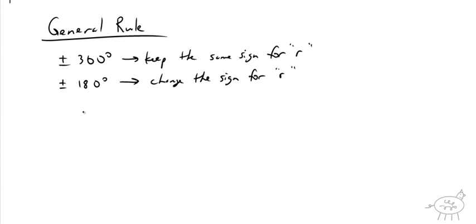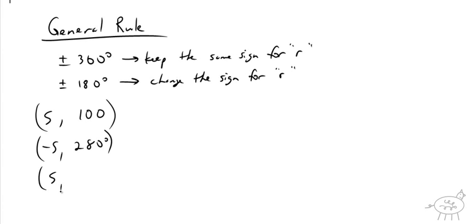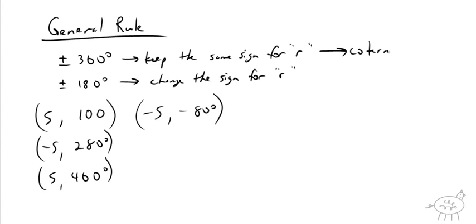Let's try another one: 5 comma 100 degrees. It's the same thing as negative 5 comma 280 degrees — when I add 180, I get 280. Add another 180 and I get 5 comma 460 degrees. I can also say negative 5 comma, and if I subtract 180 from 100, I get negative 80 degrees. These are all equivalent values. Remember: add and subtract 360, keep the same sign for R; add and subtract 180, change the sign for R.